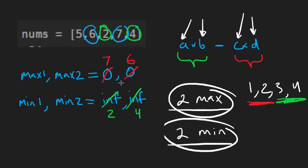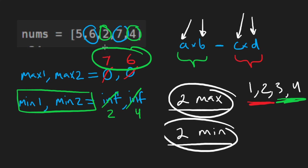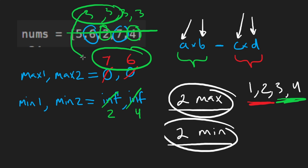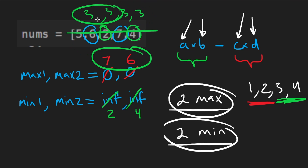We do the same with minimum elements: two and four are the smallest, so two goes to min1 and four to min2. Notice that as long as we put the two largest numbers in the max variables and the two smallest in the min variables, we guarantee there won't be overlaps. The only way we'd fail to choose four distinct integers is if all four integers happen to be exactly the same, but even then, two belong to one group and two to the other — they are at distinct indices, so the solution works.